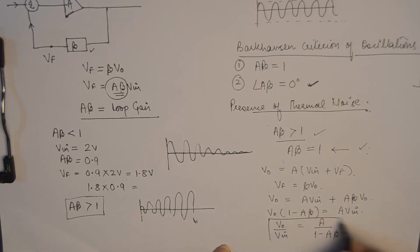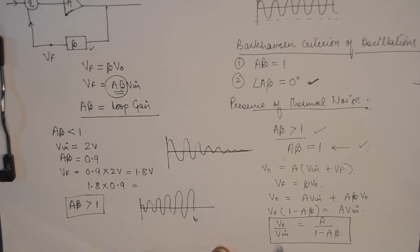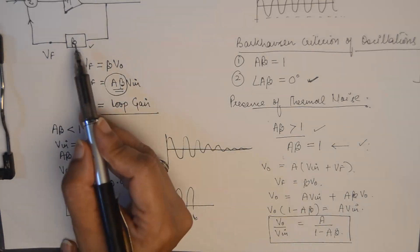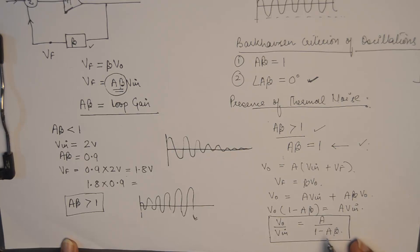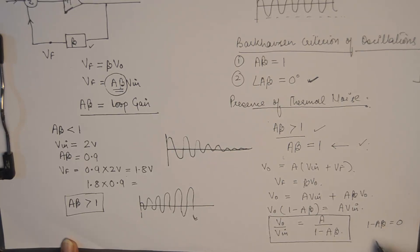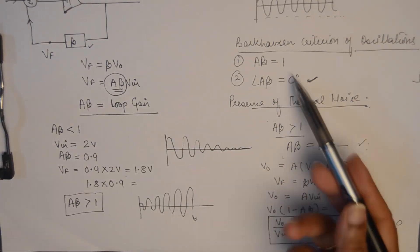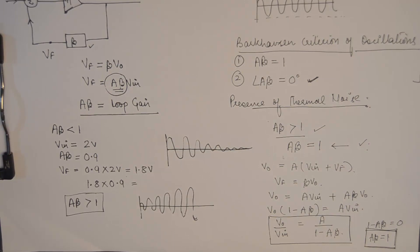Now pay attention to this equation and this configuration. We say that there is no input voltage being applied. If there is no input voltage, that clearly indicates VIN is equal to 0. If VIN is equal to 0, then (1 minus A·beta) should also be equal to 0, and therefore A·beta should be equal to 1. This is the mathematical proof of the Barkhausen criteria condition.